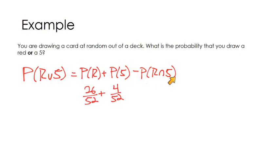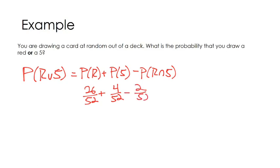We subtract the cards that were double counted. All red cards are counted in the first term, but two fives — the five of diamonds and the five of hearts — are red cards that were already included in that category. So we subtract 2 out of 52. That gives us 28 over 52, which simplifies to 7 over 13, or roughly 54%.